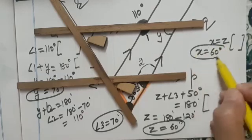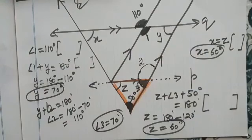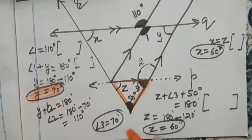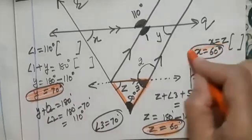X will be 60 degrees. So I hope this question is clear to all of you. So we have found the value of Y 70 degrees, then Z is 60 degrees and X is 60 degrees.